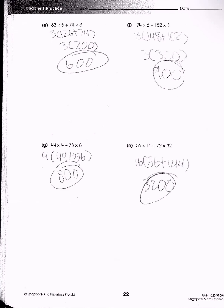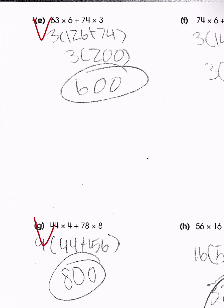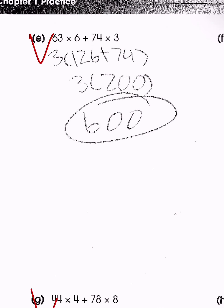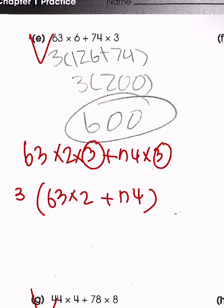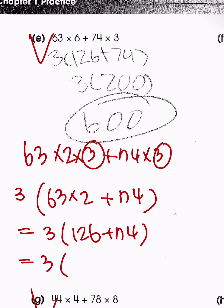Solving problems E and G: For E, 63 times 6 can be rewritten as 63 times 2 times 3 plus 74 times 3. Grouping by 3 gives 3 times (63 times 2 plus 74) = 3 times (126 plus 74) = 3 times 200 = 600.